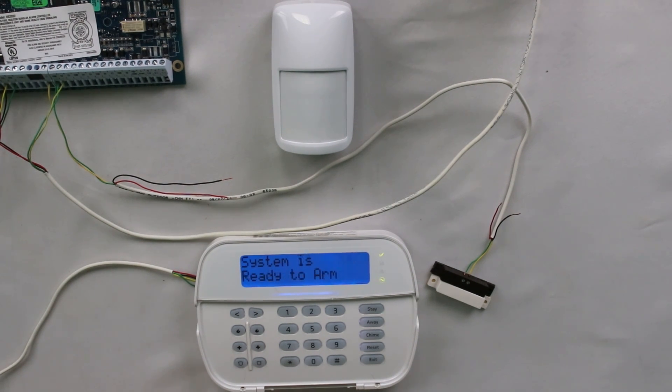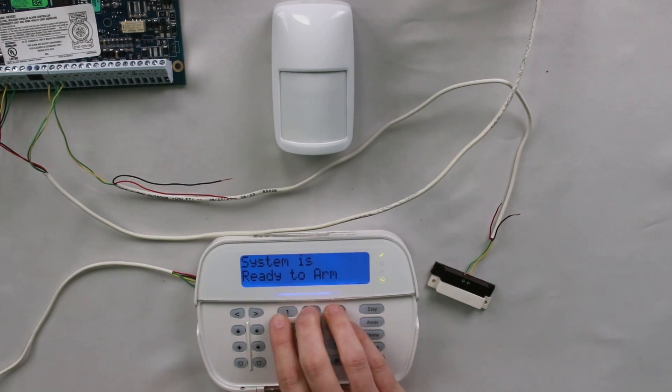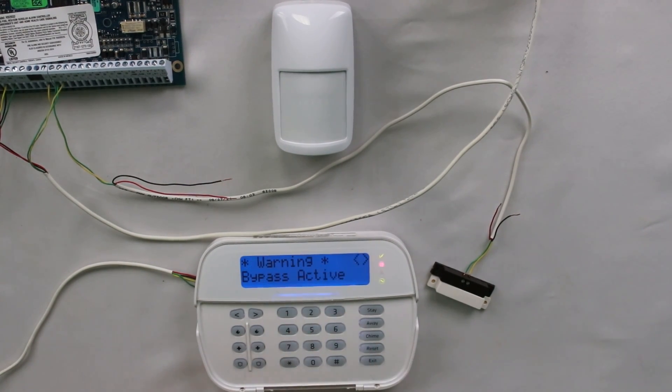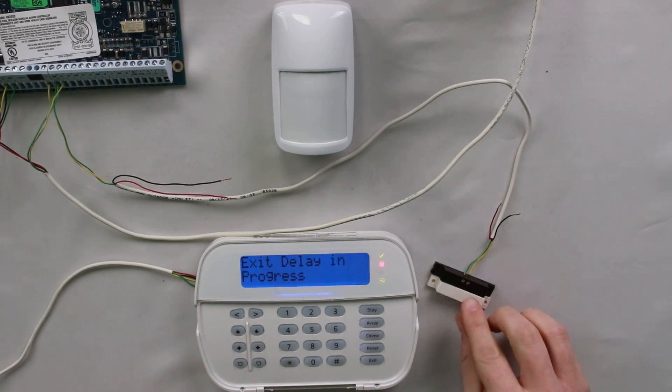So now what I'm going to do is I'm going to arm the system. And as soon as I start arming it, I'm going to open and close that entry exit door. So one, two, three, four, arm it, warning, bypass active, exit delay in progress.